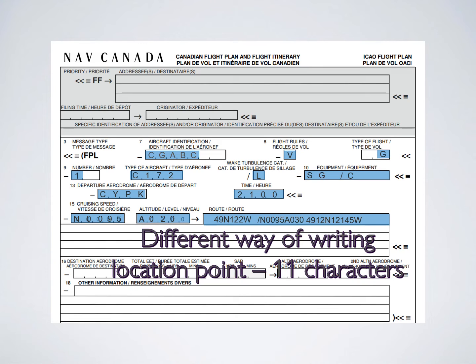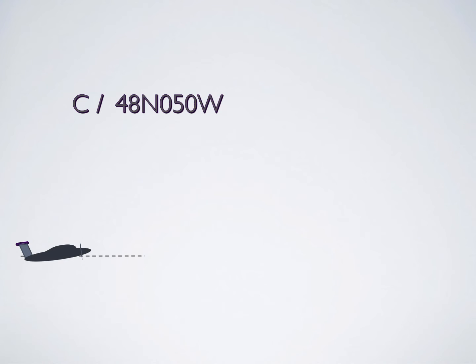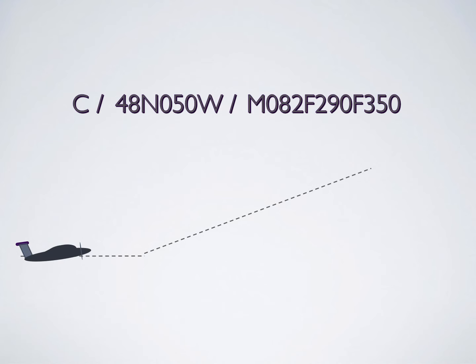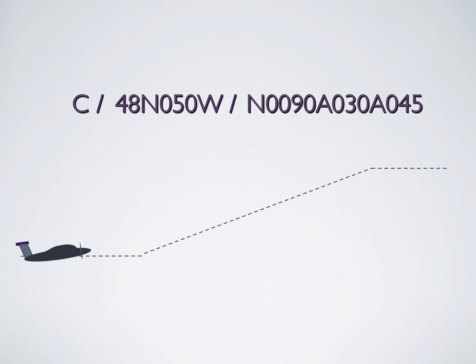If you're planning an extended cruise climb, denote it in the flight routing section with the letter C followed by an oblique stroke, then the geographical point where the cruise climb starts in seven-digit lat/long format, then the speed to be maintained during the climb in knots as discussed before. Also include the altitude at which the cruise climb starts and the altitude at which it ends, and note that alongside your other geographical points.